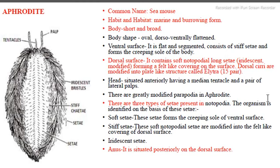First there is Aphrodite, known as the Sea Mouse. It is marine and burrowing. The body is short and broad, oval in shape, and dorsoventrally flat and segmented. On the surface there is a marginal lateral structure with small extensions known as setae, which are used for movement and attachment to the substratum.